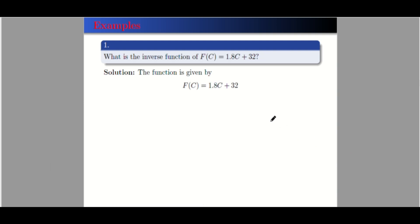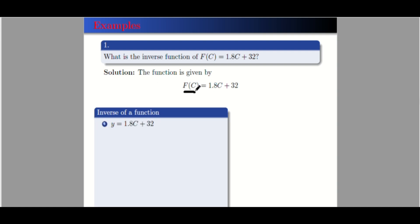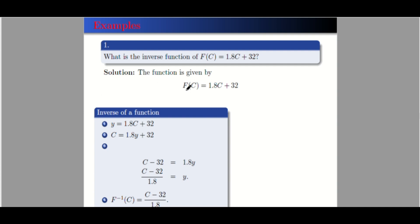Let's look at another example: the conversion from degrees Celsius to Fahrenheit. The formula is a function of C, given by f(C) = 1.8C + 32. To find the inverse, step one: replace f(C) with y. Step two: interchange the roles of the variables, giving c = 1.8y + 32. Step three: transpose positive 32 to get negative 32, then divide both sides by 1.8.